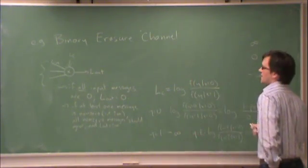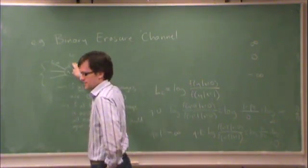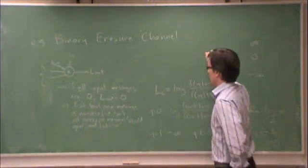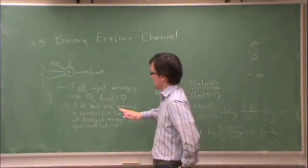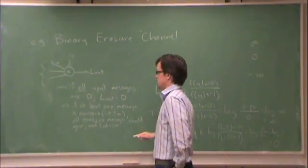And L out is equal to whatever that was, either plus or minus infinity. So remarkably, the output message, whatever LC is, excuse me, the possible values for LC are infinity, 0, and minus infinity. Similarly, the possible values for L out are infinity, 0, and minus infinity.